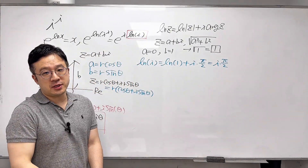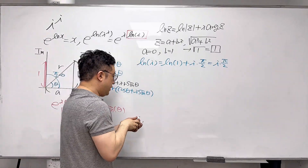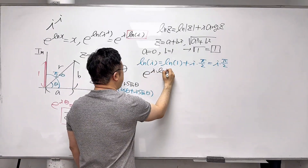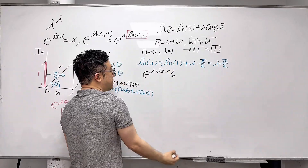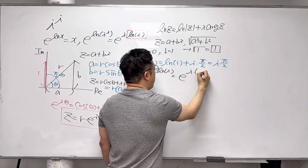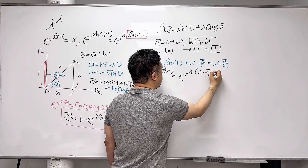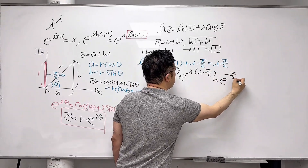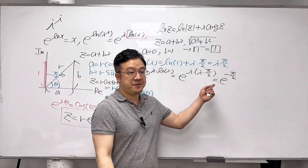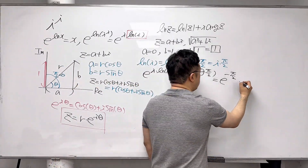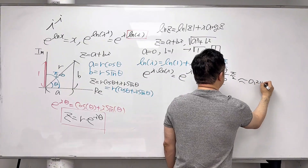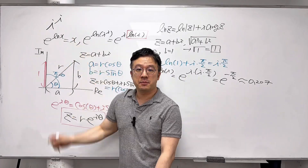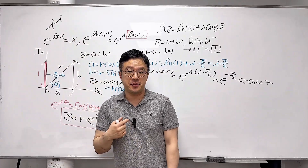Now let's go back to e to the power of i times ln(i). Using our result, e^(i · ln(i)) equals e to the power of i times i times π/2, which becomes e to the power of negative π/2. The value of e^(−π/2) is around 0.207, and this is called the principal value of i to the power of i. But we will have infinitely many values for this.